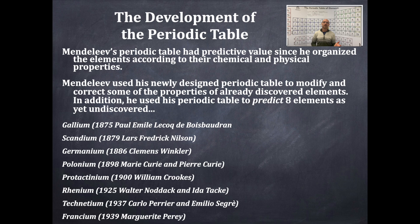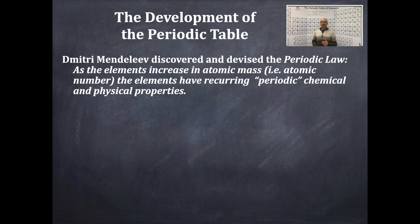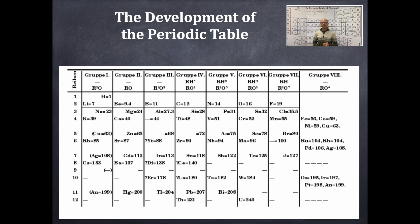Scientists truly stood on the shoulders of a giant — Dmitry Mendeleev. He devised the periodic law, which states: as elements increase in atomic mass, or atomic number as we later discover, the elements have reoccurring, or 'periodic,' chemical and physical properties. That is the periodic law, and it is extremely important.